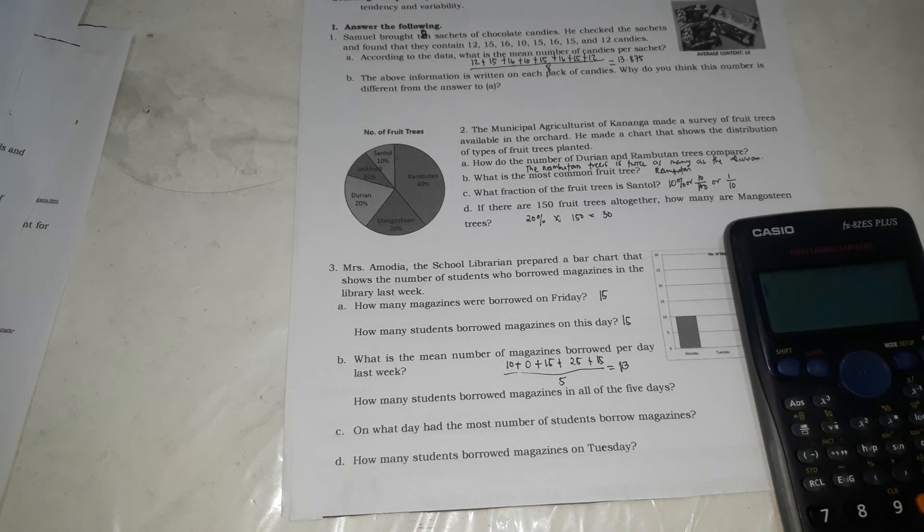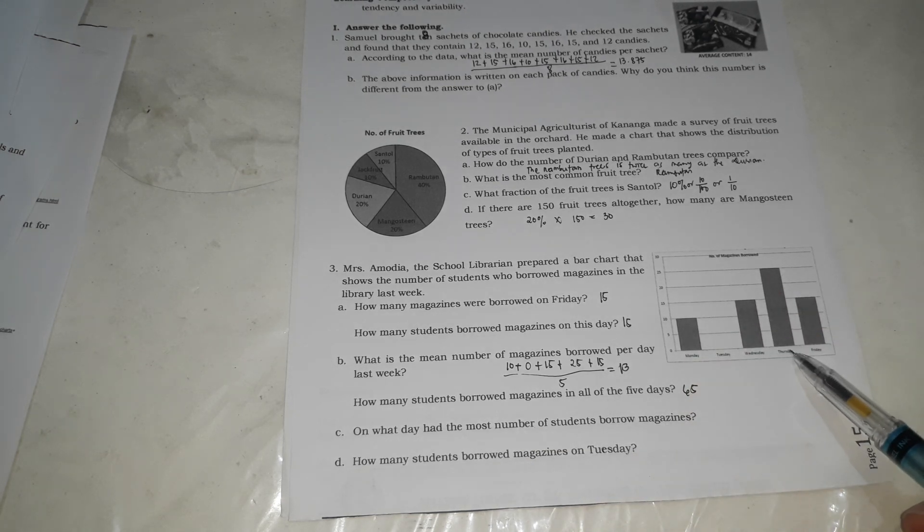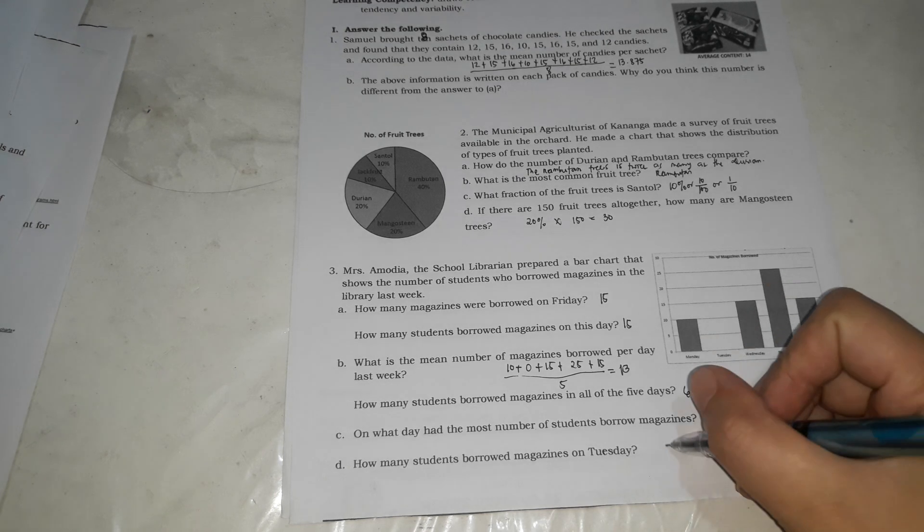How many students borrowed magazines in all of the 5 days? I-plus natin yung sa taas. 10 plus 25 plus 15 plus 15 equals 65. On what day had the most number of students borrowed magazines? It's clear. Yung what day pinakamarami daw. Yung pinakamatas is Thursday. How many students borrowed magazines on Tuesday? Ilang daw yung borrowed nung Tuesday? Walang dito. So, it's zero.